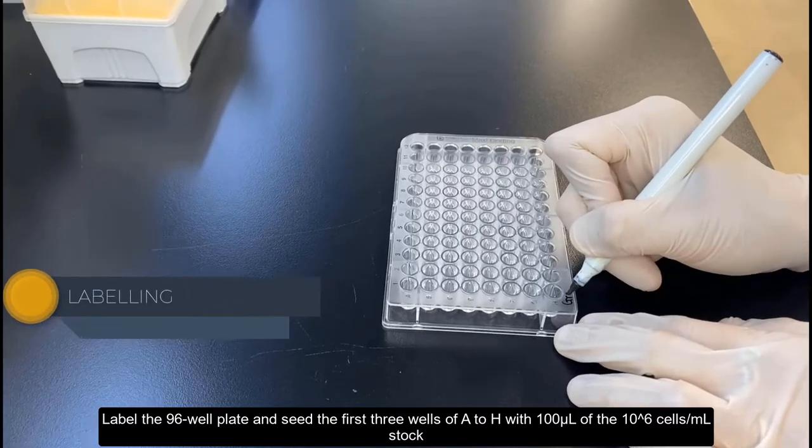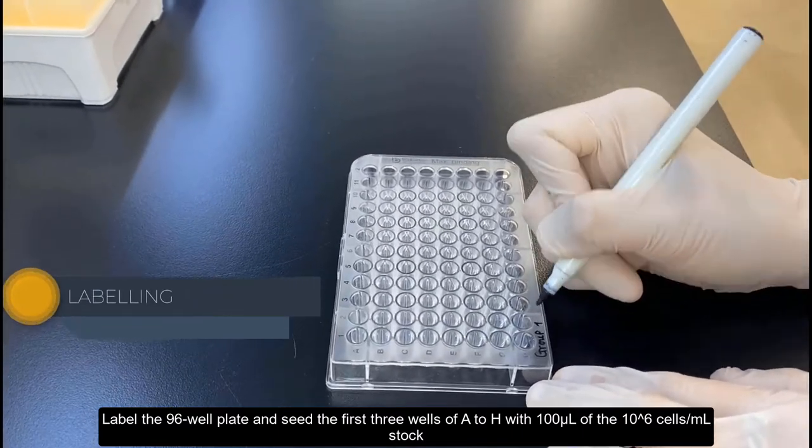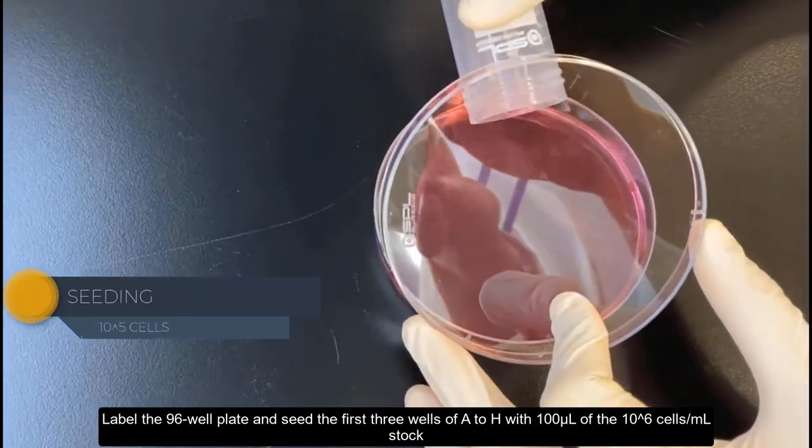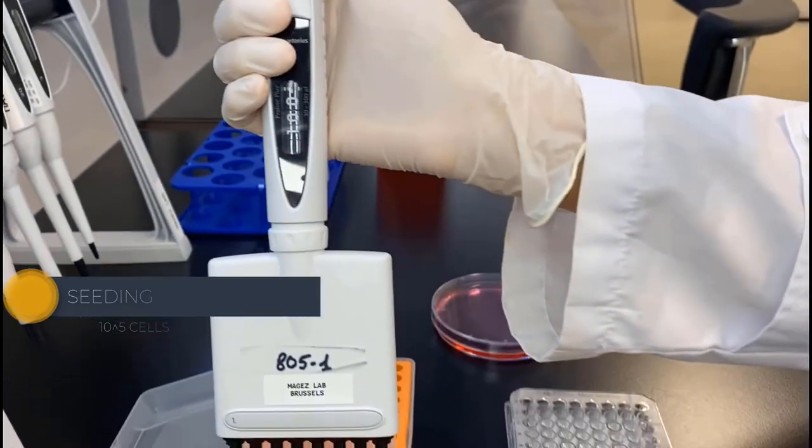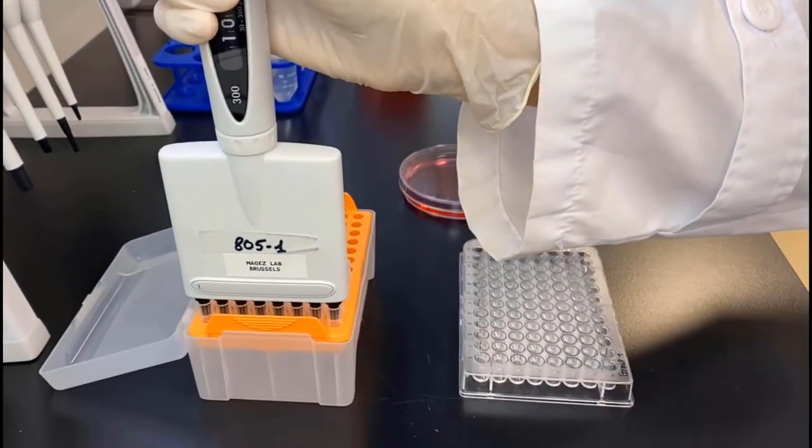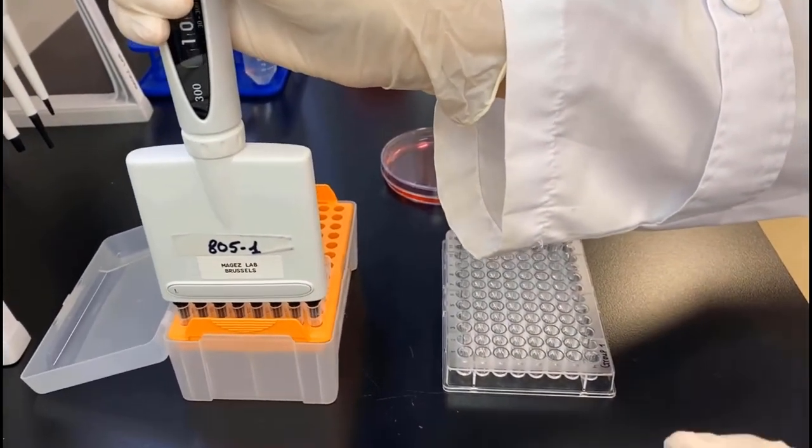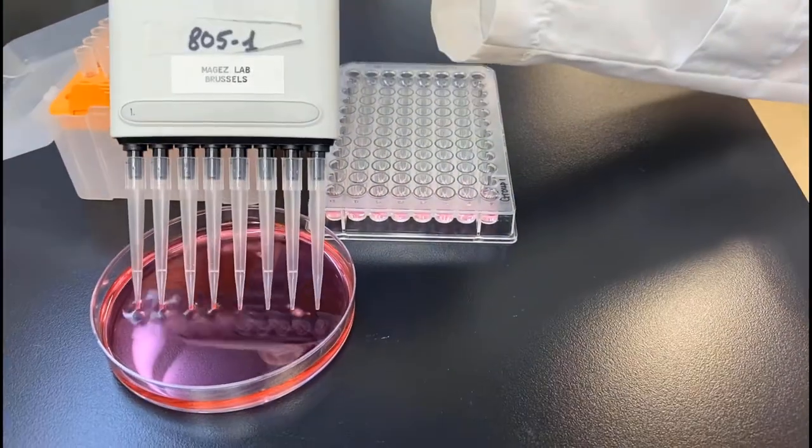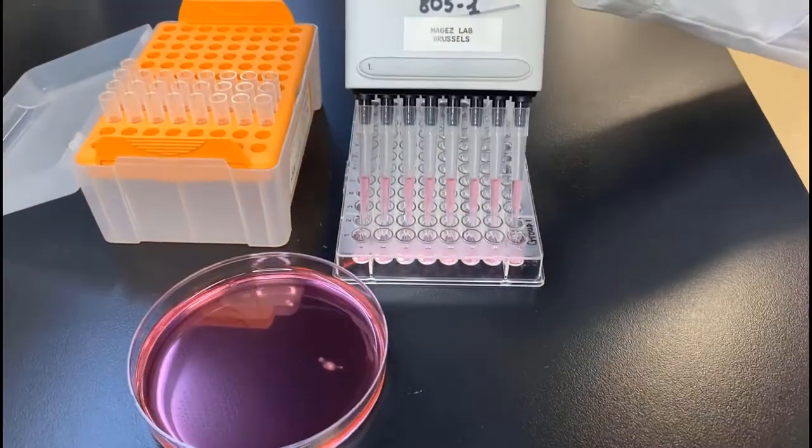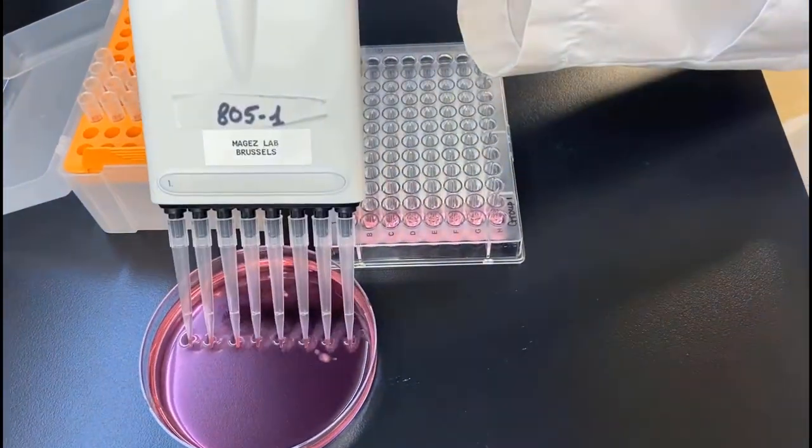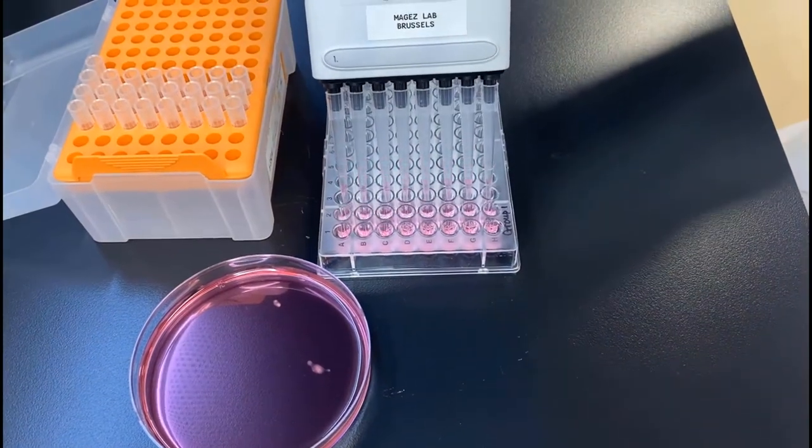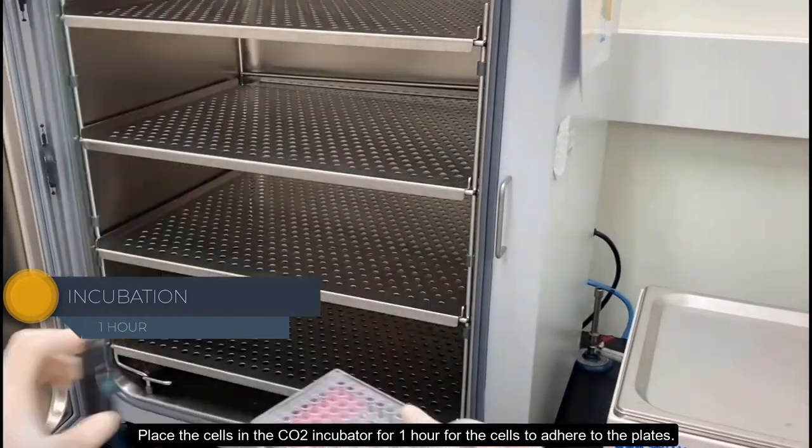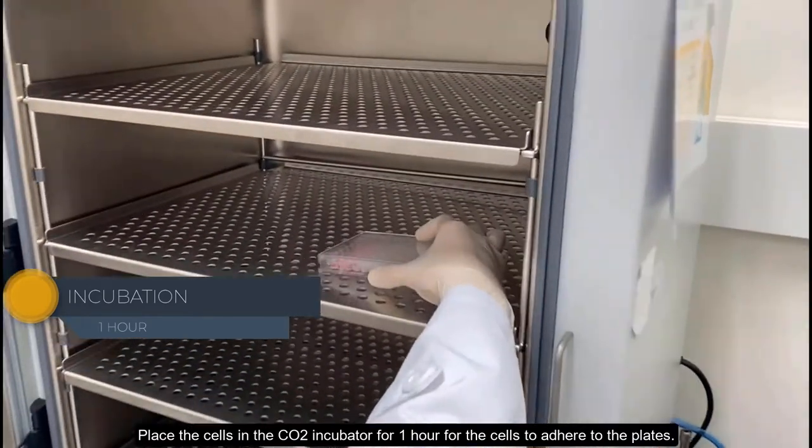Label the 96-well plate and seed the first three wells of A to H with 100 microliters of the 10 to the 6 cells per ml stock. Place the cells in the CO2 incubator for one hour for the cells to adhere to the plate.